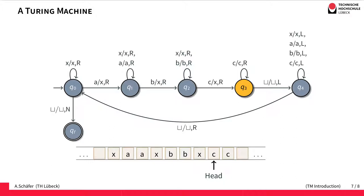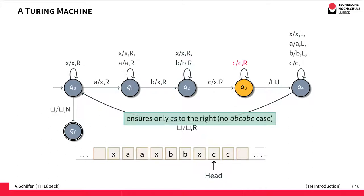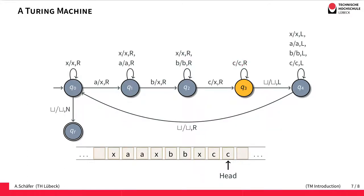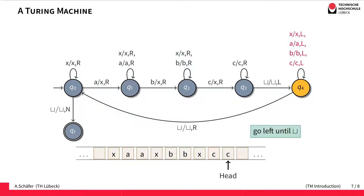In state Q3 we encounter C's and move right, ensuring there are only C's to the right with no other letters. Eventually our head lands on a blank. Once we have encountered the blank, we want to go to the left, so we change state to Q4. State Q4 skips all letters and moves left until it finds another blank. Once we find that blank on the left, we change state and start all over, moving to Q0.